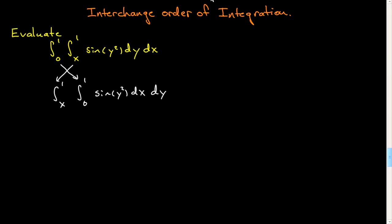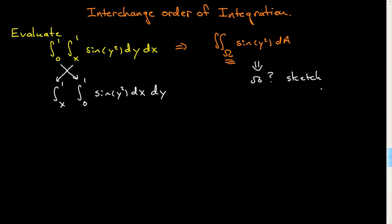So what do you do? You realize that this is fundamentally a double integral of sine of y squared dA over some region omega. What you want to do is come down here and answer: what is omega? You need to do a sketch. I don't care whether the question asks for a sketch or not — you'd be foolish not to be drawing sketches of these things, although in this case the geometry is rather simple.